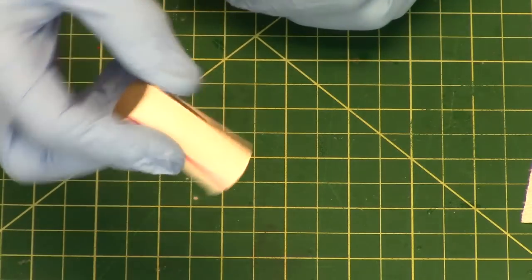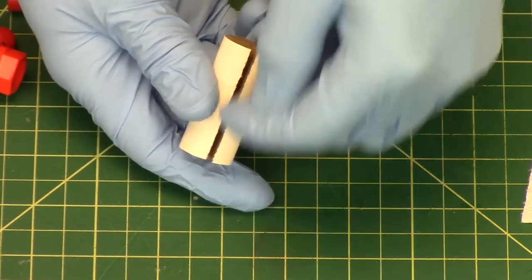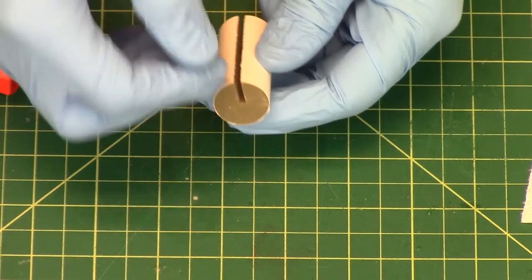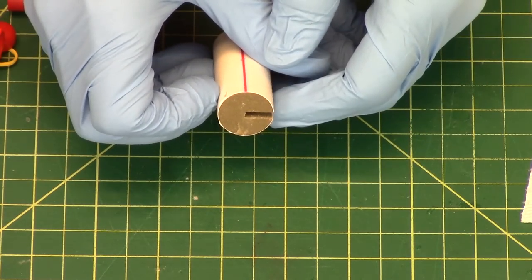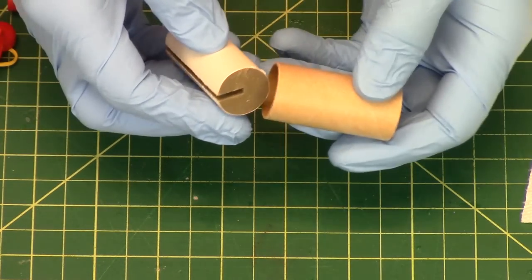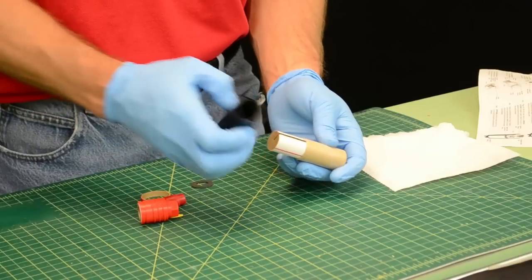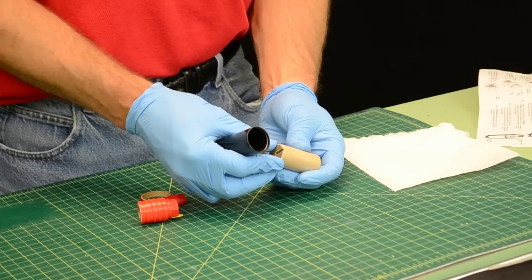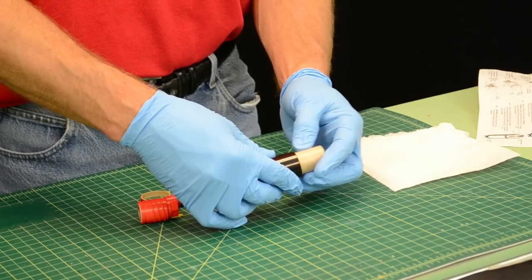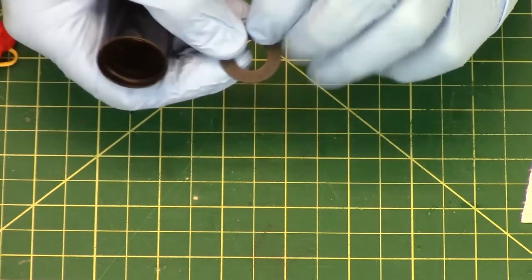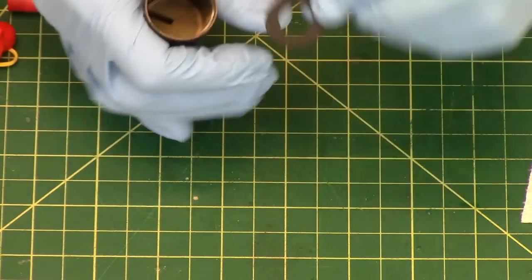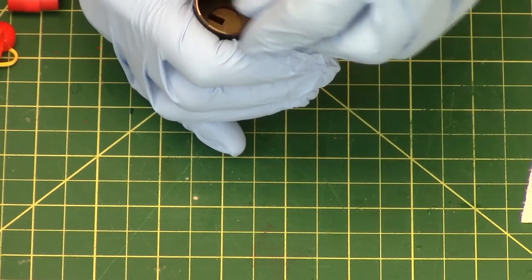Now this is the propellant grain and you can see it's a C-slot. This configuration is called a C-slot because it looks like a C. And then this is an insulator, it keeps the case from getting too hot. So that goes in there. And then this is just dropped in. And then you've got this fiber washer. It's pretty stiff, it's made out of really stiff paper. And that goes in there like that. And then this is going to be screwed in.